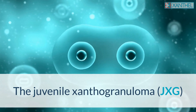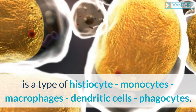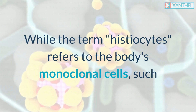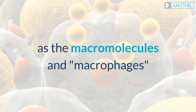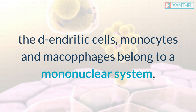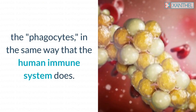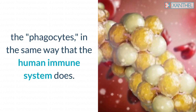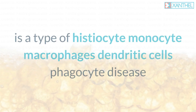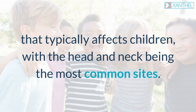Juvenile Xanthogranuloma (JXG) is a type of histiocyte disease involving monocytes, macrophages, dendritic cells, and phagocytes. The term histiocytes refers to the body's mononuclear cells such as macrophages that occur in various tissues. Dendritic cells, monocytes, and macrophages belong to the mononuclear phagocyte system, similar to how the human immune system operates.